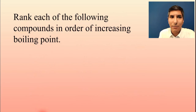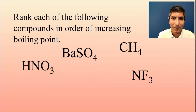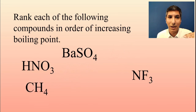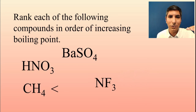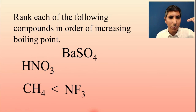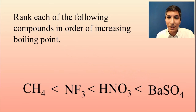Now let's take those same four molecules and rank them in order of increasing boiling point. Which is lowest? The one with just London dispersion forces: that's the methane molecule. What's a little bit higher? Dipole-dipole, so that's nitrogen trifluoride. What's a little bit higher than that? Hydrogen bonding — that's our HNO3. And what's the highest of them all? Ionic forces, so barium sulfate. You can look these up and confirm that this is the case.